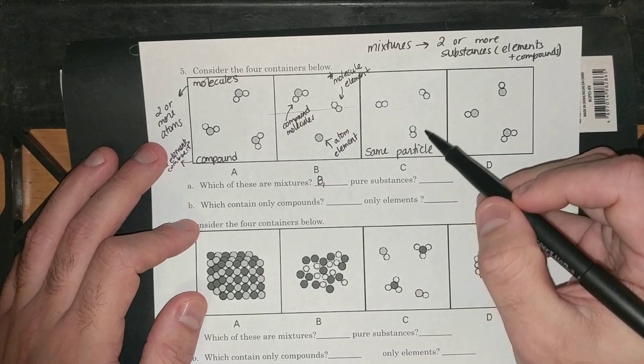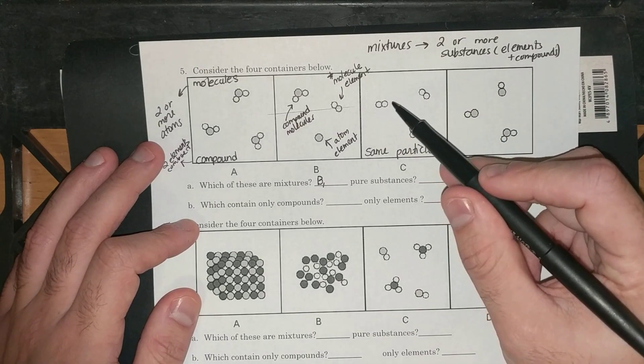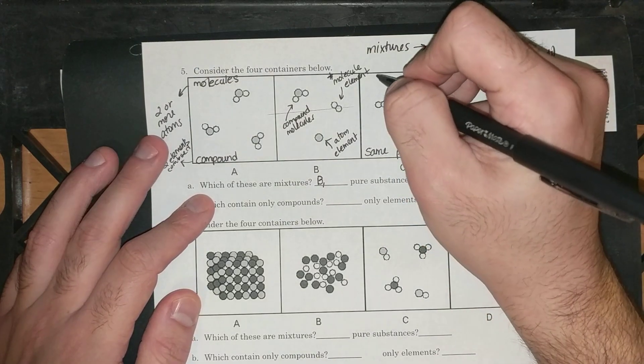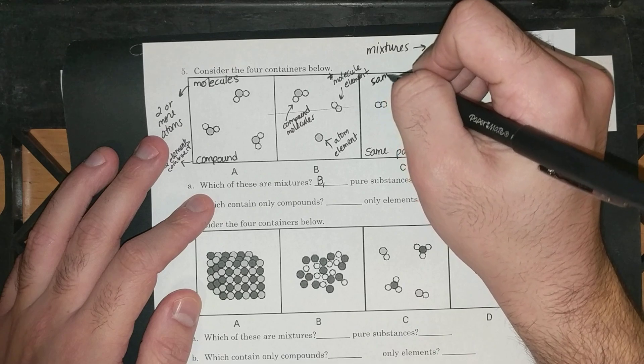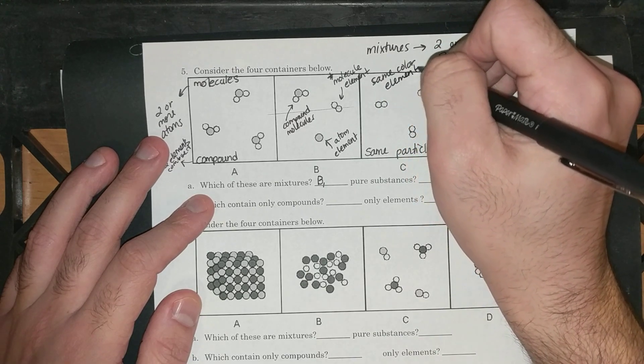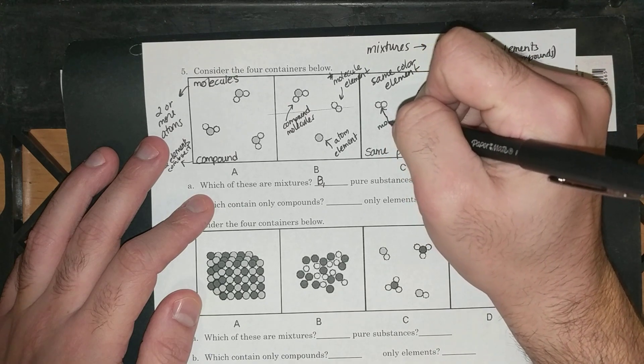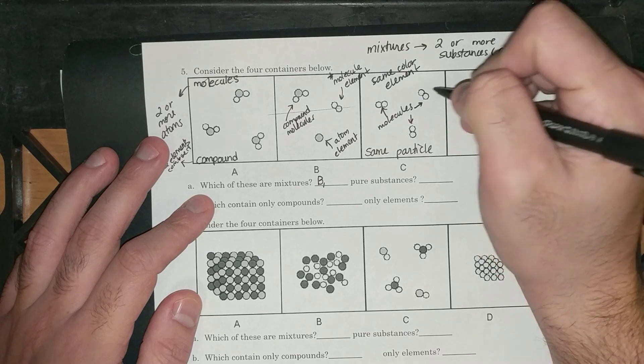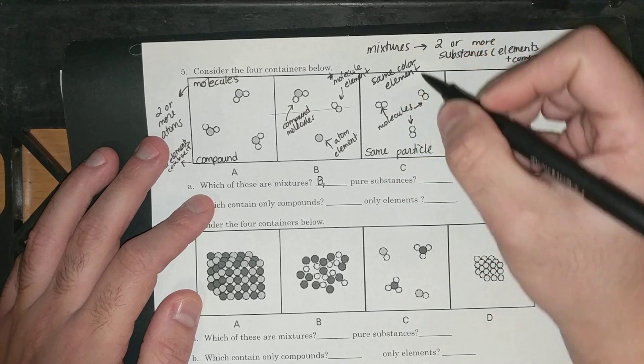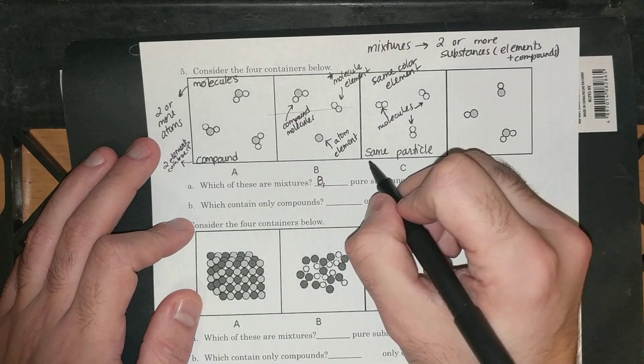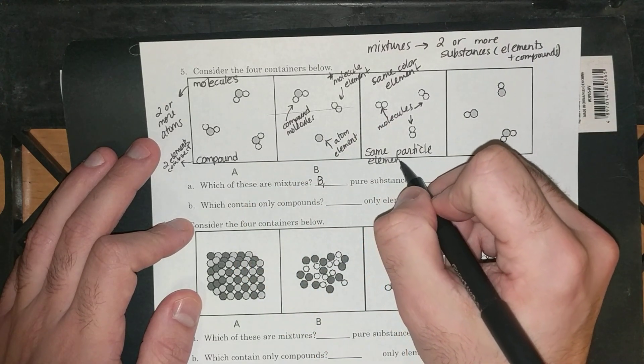Then if I go into the third container, I have all of the same particle. Since they're all the same particle and all the same color, this is definitely an element. But what kind of element? This is a molecule of an element. So these are all molecules of elements. This is an element. And this box is an element, just like these are all molecules of the same kind. This is a compound. This is an element.